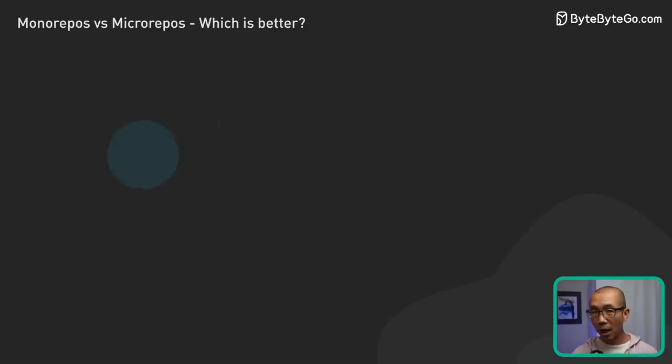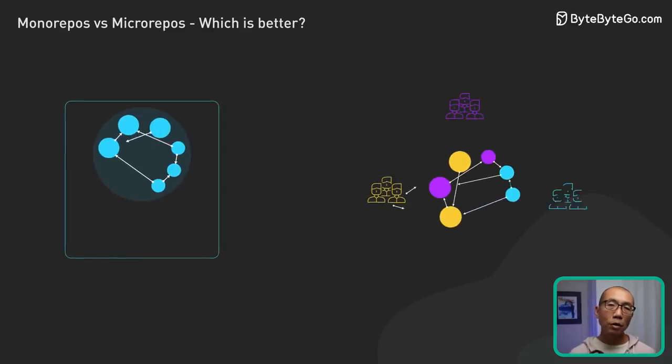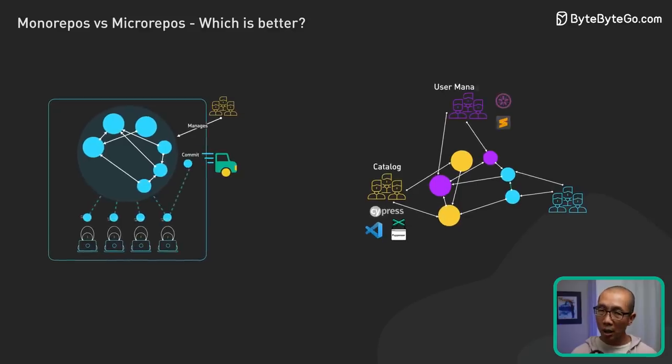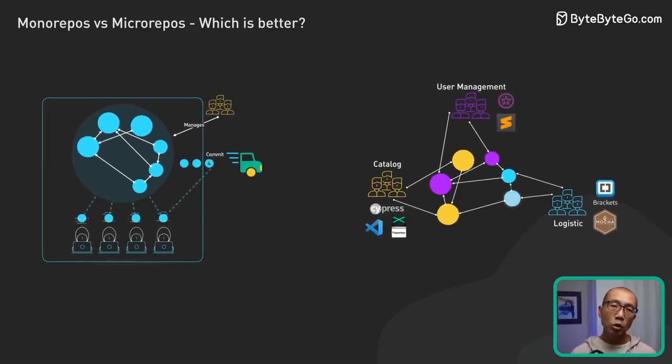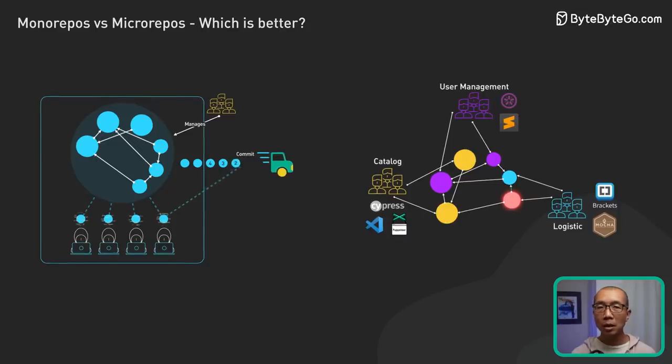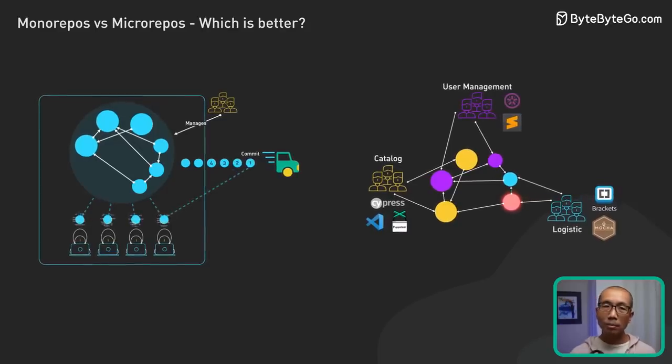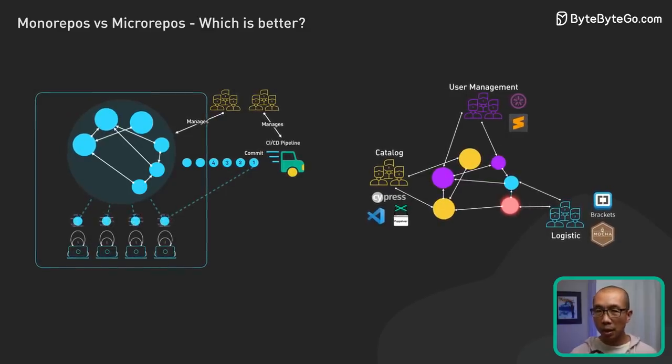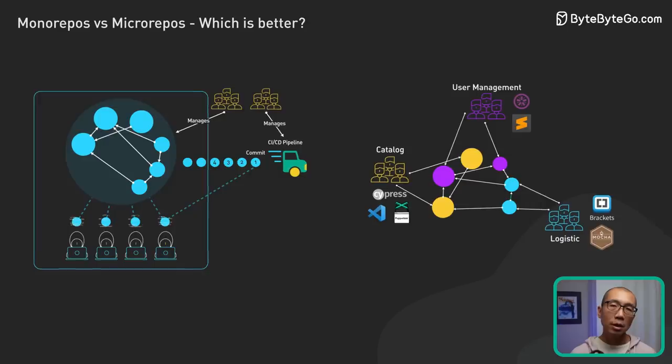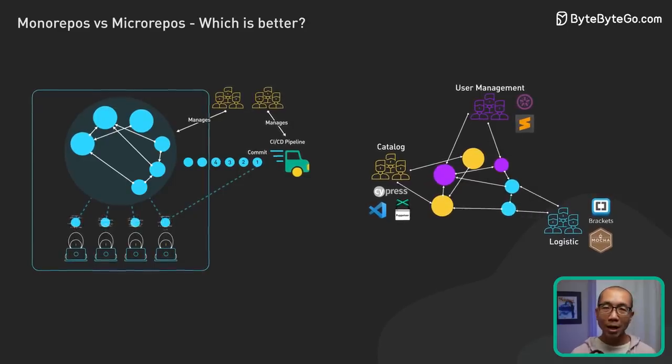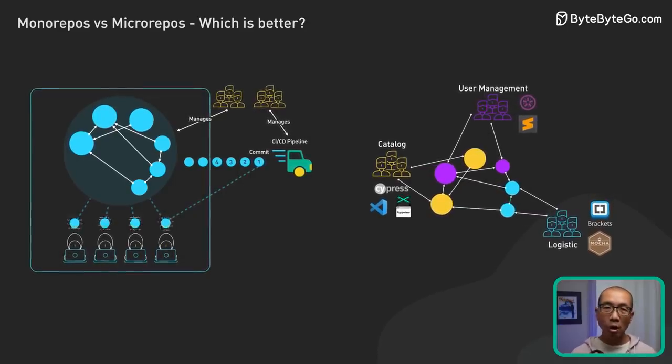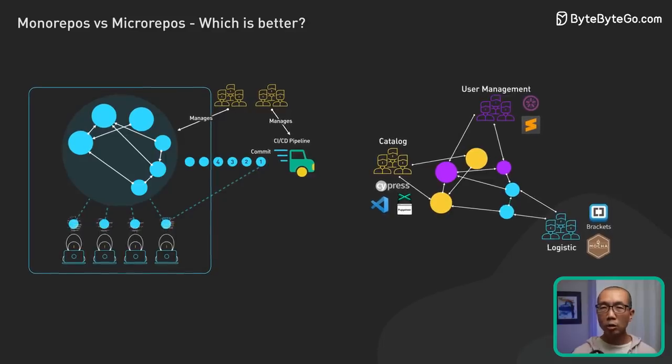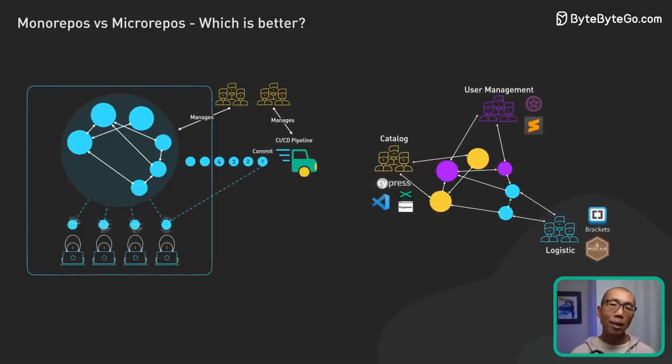On the flip side, micro-repos offer flexibility, risk isolation, and clear ownership. They can be a good choice for organizations that prioritize team autonomy, especially if teams are working on distinct projects. But they come with their own challenges. They can be more complex to manage, especially when making cross-repo changes, and may lead to code duplication if not managed well.